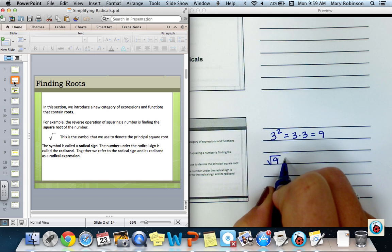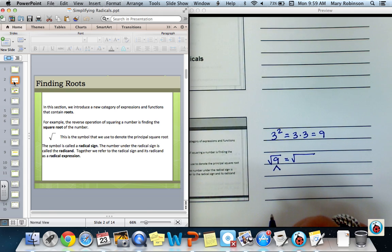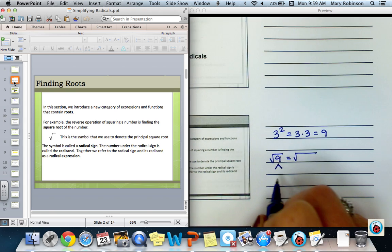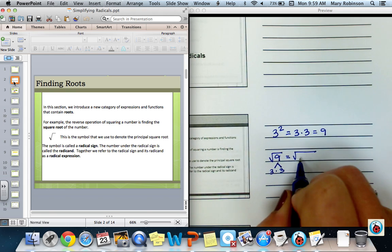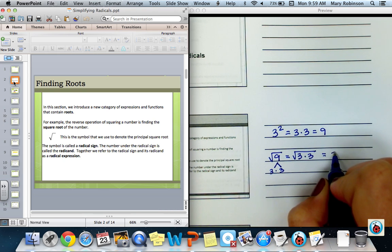The reverse operation of squaring a number would be to take the square root of that number. The square root of 9 equals the square root of 3 times 3, then we know that the square root of 9 is equal to 3.